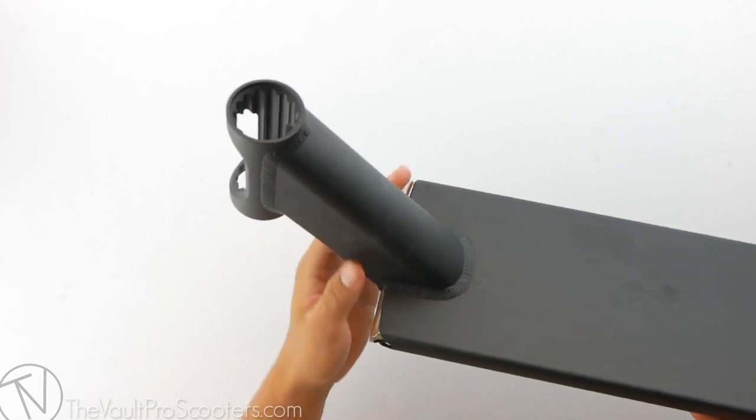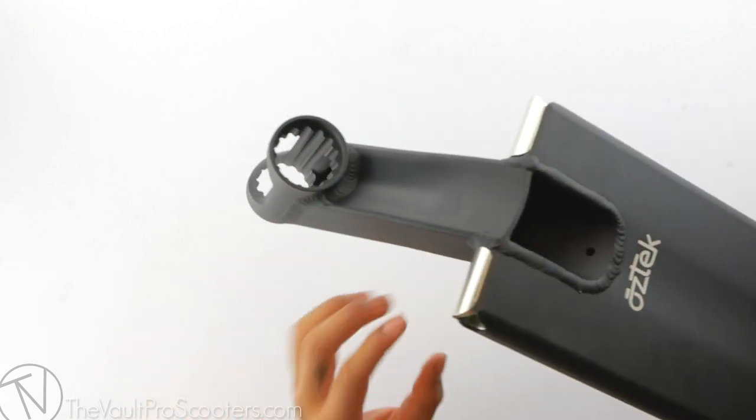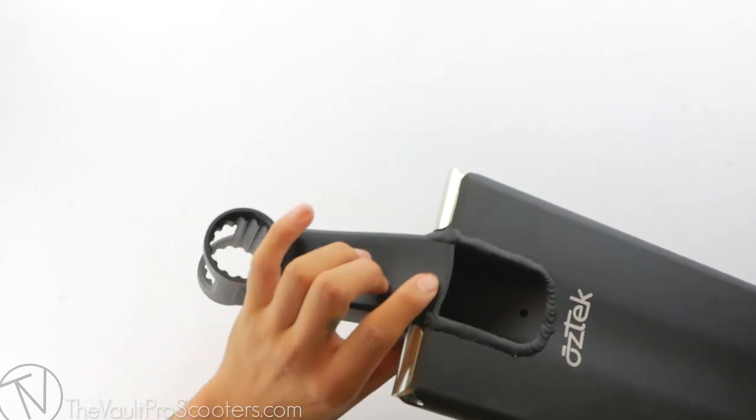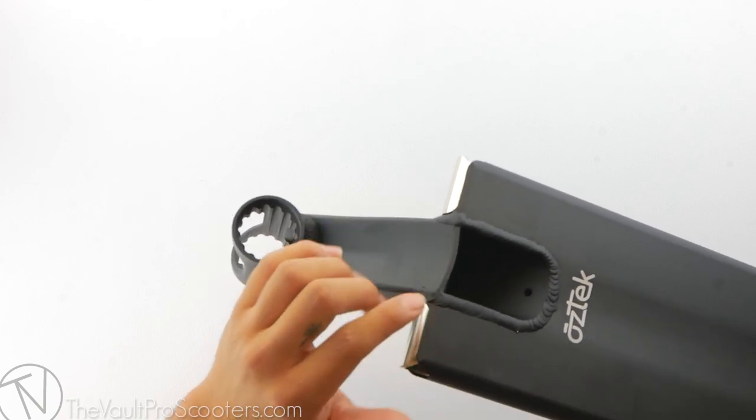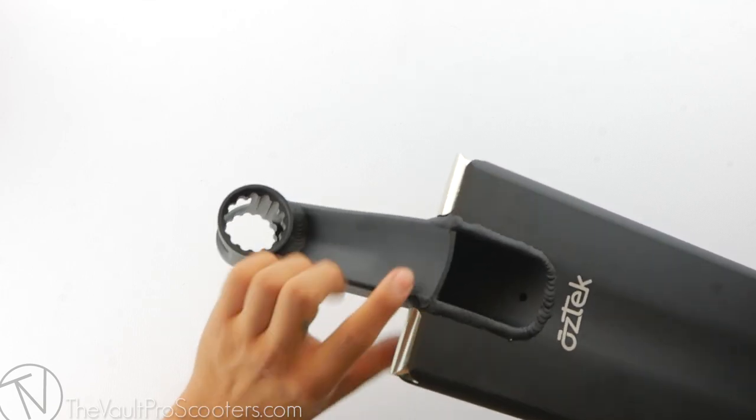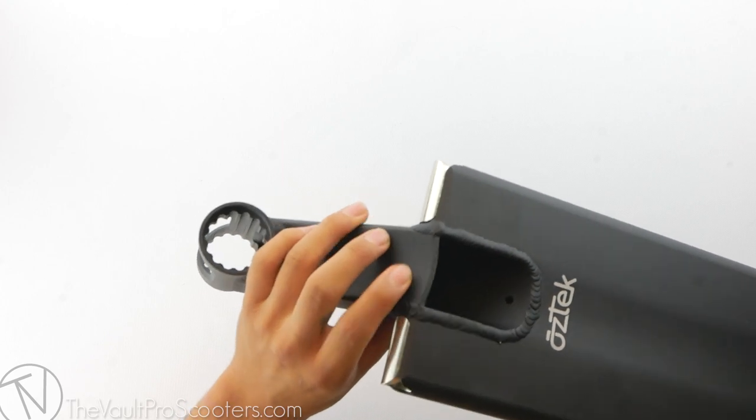Looking at the front end of the deck, the head tube is pretty straightforward. Turning it over, the bottom of the head tube has a crook groove in it. This allows you to lock in crooked grinds, smith grinds, and any grind that involves this part of the head tube will lock in smoothly.